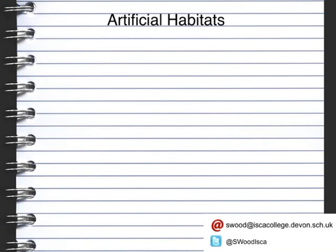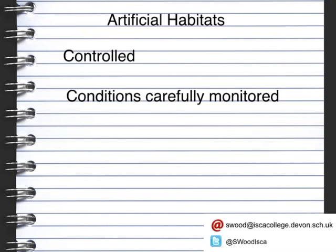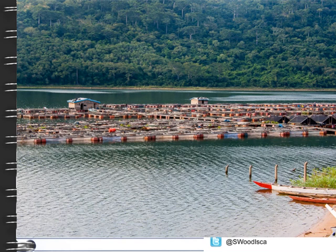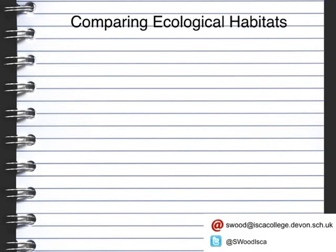An artificial habitat is, as it says, artificial — which means it's been created and set up. Because of this, the artificial habitat can be controlled and the conditions can be carefully monitored. Examples of this could be a fish farm, such as this one here. Making a comparison of ecological habitats can be done, as we looked at in previous lessons where we looked at sampling. If you can first identify the plant and animal species there, then you can work out the populations and make comparisons between the two habitats.